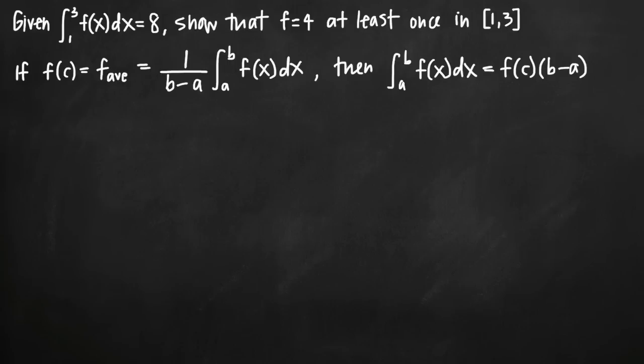Today we're going to talk about how to use the mean value theorem for integrals. In this particular problem we've been asked to show that f assumes the value 4 at least once on the interval 1 to 3, given that the area under the curve from 1 to 3 is equal to 8.